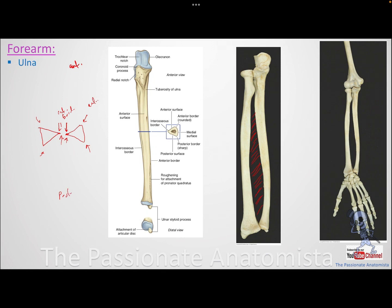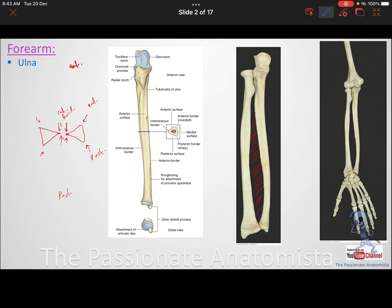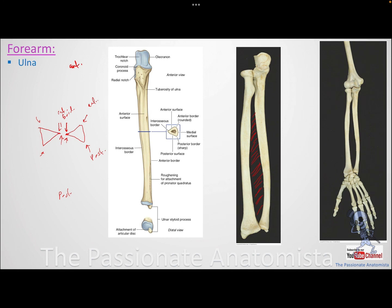The other borders are: if facing anteriorly, it's the anterior border; if facing posteriorly, it's the posterior border — for both bones. These three borders give us three surfaces. You have an anterior border, so you have an anterior surface; a posterior border, so a posterior surface; and the interosseous border with the surface opposite to it. For the medial bone, that surface is the medial surface, and for the lateral bone it is the lateral surface.